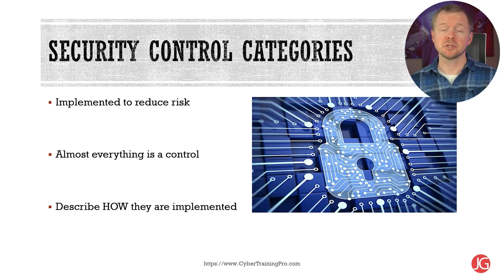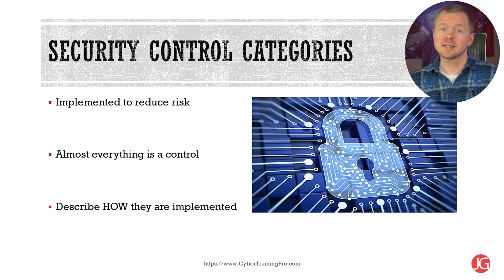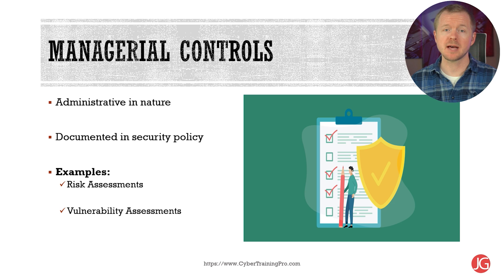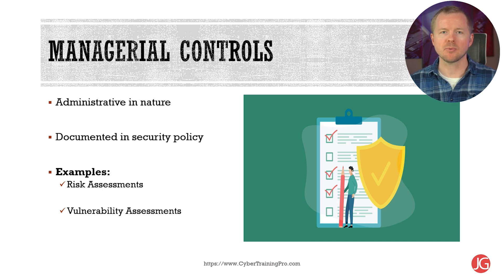Security controls are what we implement to reduce risk — just about anything from policies to technical controls like antivirus software is a control. Control categories break down controls based on how they're implemented. Managerial controls are administrative in nature and documented in an organization's security policy. Two managerial controls to know include risk assessments, which identify all known risks and help prioritize resource allocation, and vulnerability assessments, which discover current vulnerabilities in our networks.